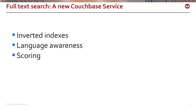FTS gives you the basic search capabilities with the click of a checkbox. Those capabilities are common to every search system: inverted indexes, language awareness, and scoring. I'm going to quickly explain these concepts, and then I'll tell you what you need to know to build and query your own indexes.